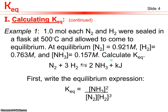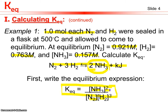In this first example, we calculate KEQ by setting up an equilibrium expression. Starting with one mole of N2 and one mole of H2 sealed in a flask at 500 degrees Celsius, at equilibrium their concentrations are 0.921 M, 0.763 M, and 0.157 M respectively. The equilibrium expression has the concentration of NH3 squared — because there are two NH3 in the balanced equation — divided by the concentration of N2 to the first power, times the concentration of H2 cubed.